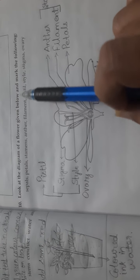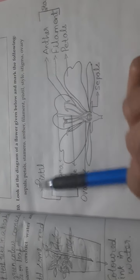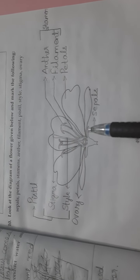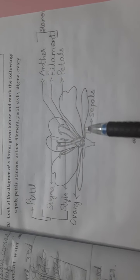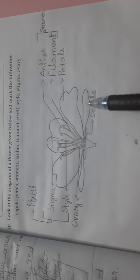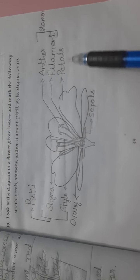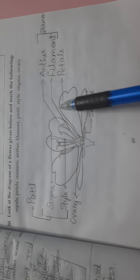The next question is, look at the diagram of a flower given below and mark the following. Here is a diagram given. You have to color it. These are the sepal which is the green part, then comes the petals, the colorful part of the flower.